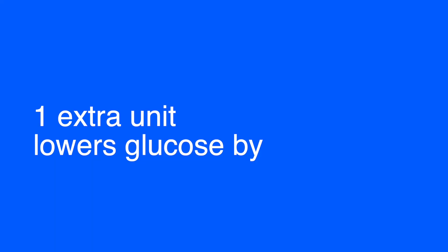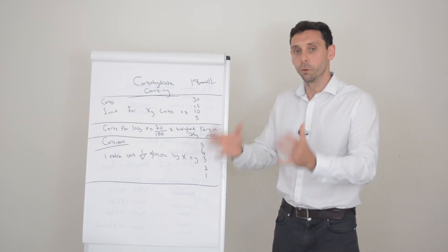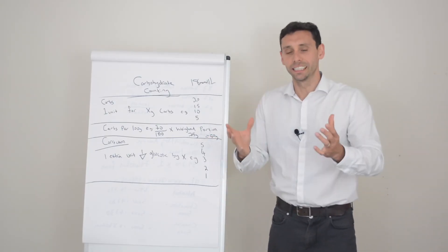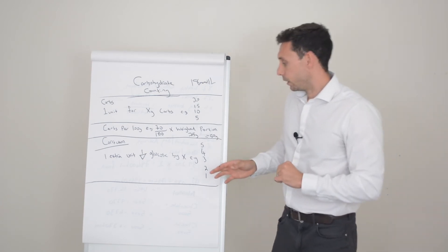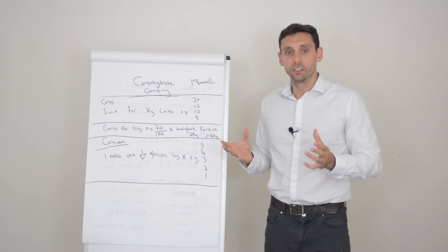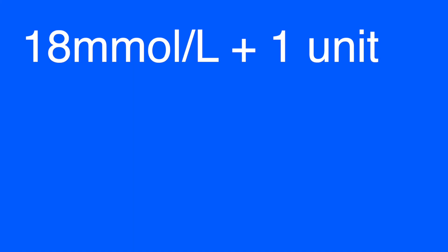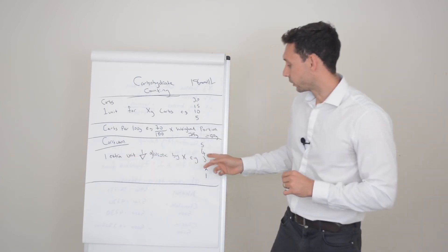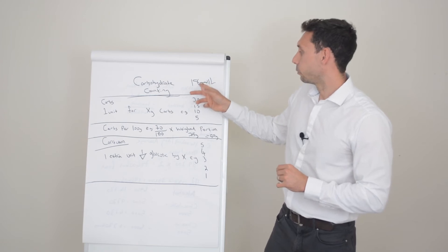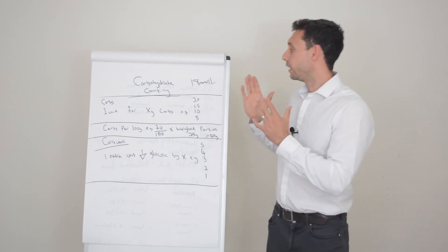So we need to get this down so we need to add extra insulin onto this five units. Now here we know one extra unit reduces glucose by x and again this ratio changes for everyone. So it might be by three, by two, by one, by four, by five. Higher the number more sensitive to your insulin. Lower the number less sensitive more resistant. You need what you need. So let's say one to three is again that's quite a standard ratio. So one extra unit reduces by three. So if I took one extra unit on top of this five so I took six in total that's going to drop to 15. If I took two it's going to drop to 12 and if I took three it's going to drop to nine because one extra unit drops three. I've taken three extra units so three times three drops me nine which means my glucose level at the next meal will be nine.